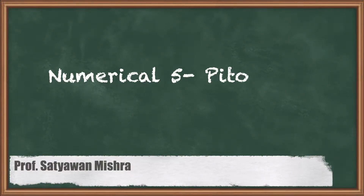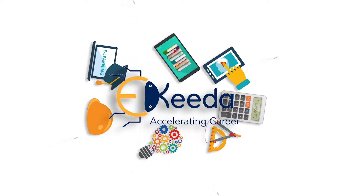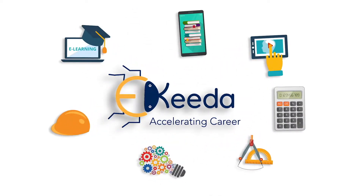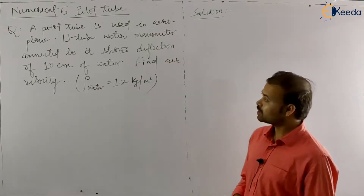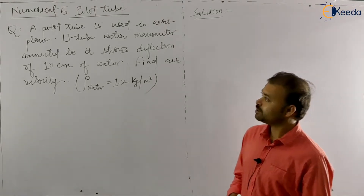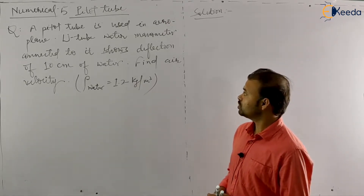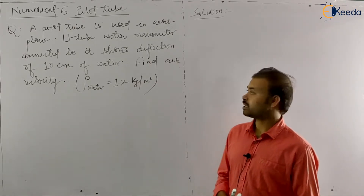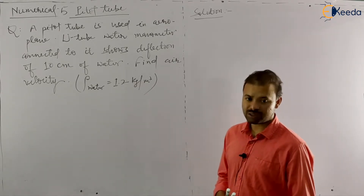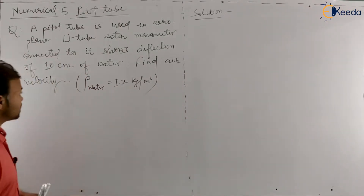Hello students, this is your fifth numerical of the topic flow measurement and this numerical is based on pitot tube. A pitot tube is used in an aeroplane. A U-tube water manometer is connected to its source with a deflection of 10 centimeters of water. Find the air velocity, that is the flow velocity, which will be in meters per second.